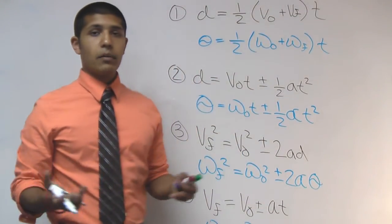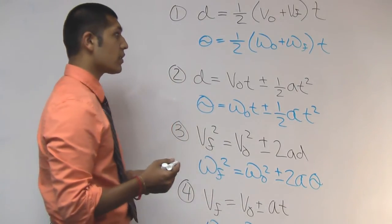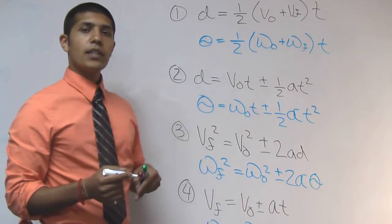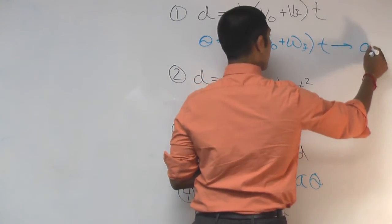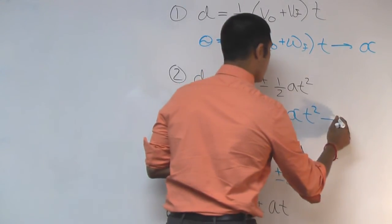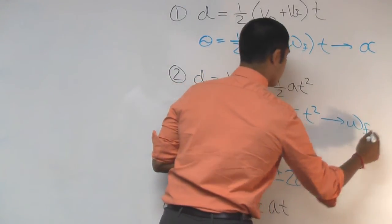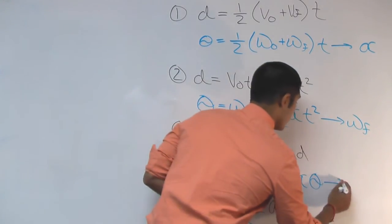Now, just like we had the missing variable technique with linear kinematics, we can use the same exact technique for rotational kinematics. So in this first equation, the missing variable is alpha. For the second equation, the missing variable is omega final. For the third equation, the missing variable is going to be time.